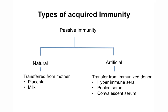Another form is convalescent serum — serum obtained from a person who has just recovered from an infection. Since that person has recovered, their antibody titer is high, and this serum is harvested and used for prevention of infection in patients. For example, plasma therapy tried for COVID-19 infections is an example of the use of convalescent serum.